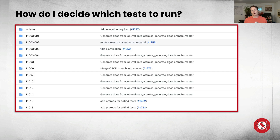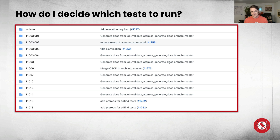A question that I get a lot from folks who want to get started with Atomic Red Team is: where do I start? And it can be really, really overwhelming. What you're looking at here is a very small selection of tests. There are hundreds of attack techniques, and probably thousands of tests. So if you were to click on one of these folders, you might see one or multiple Atomic Red Team tests associated with them.